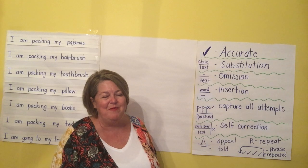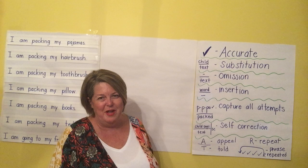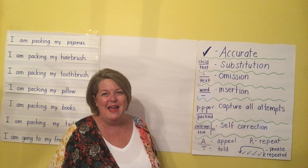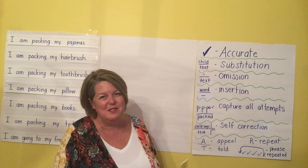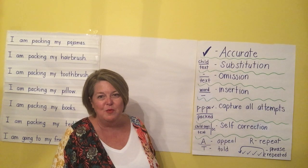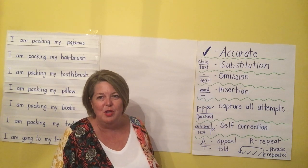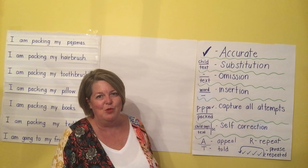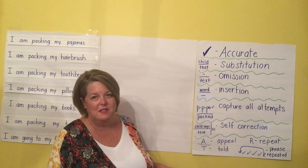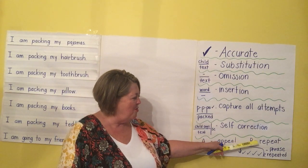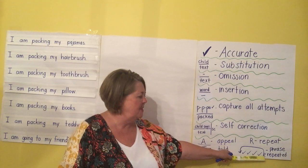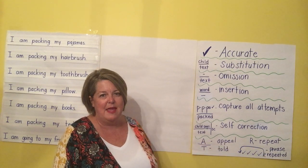There are varying other things that could happen — sometimes children get all tangled up. But these are just some of the main errors you would encounter. A child might appeal for help — they might look at you with puppy dog eyes, not say a word, just stop and look at you begging for help. Sometimes they might say 'I don't know, will you help me?' We would code that with an A for appeal. If you tell them the word, you score it with a T for told. Another thing they do is repeat words — when they repeat a word, you put an R. If they repeat the whole phrase, you put an R but draw an arrow back to where they actually began repeating.